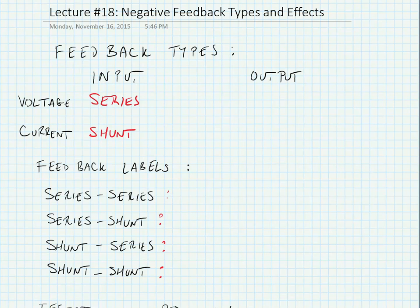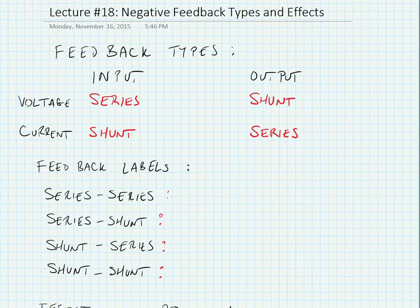Conversely, at the output, if we're outputting a voltage we'd like to have a low impedance, and hence we'd like to use a shunt connection at the output. If we're outputting current, we'd like to have a high impedance, so we'd like to have a series connection at the output.